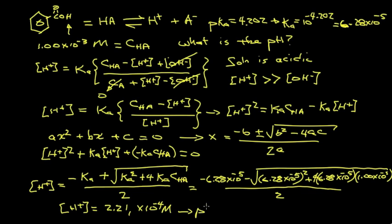So the pH is equal to negative 1 times the log of the hydrogen ion activity, and we're going to simplify that and just use the hydrogen ion concentration. We get a value of 3.655. That's our pH.